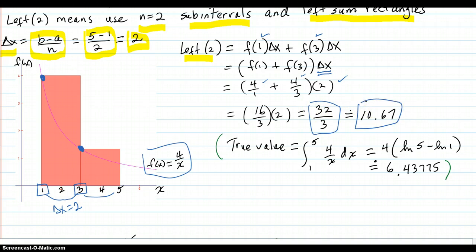The true value of the integral is this, which comes out to be 6.43775. So it's pretty far off, but we only used two sub-intervals. And notice that our areas are way over. They're an overestimate. And that's just because the curve happens to be decreasing monotonic.